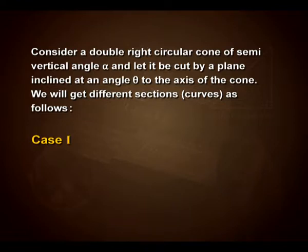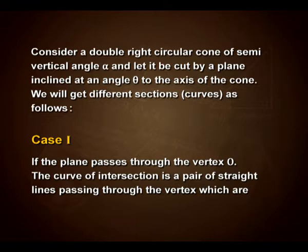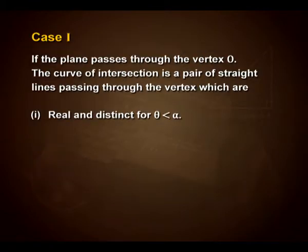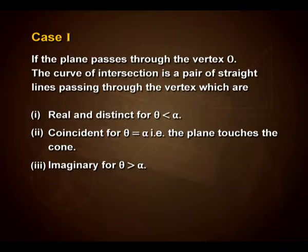In case 1, if the plane passes through the vertex O, the curve of intersection is a pair of straight lines passing through the vertex, which are real and distinct for theta less than alpha. They are coincident for theta equal to alpha, that is, the plane touches the cone, and they are imaginary for theta greater than alpha.